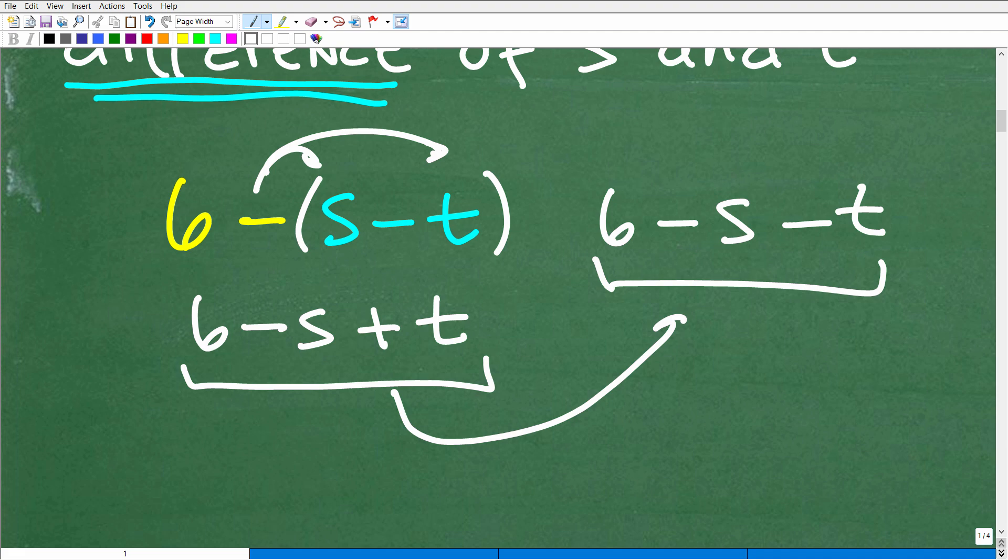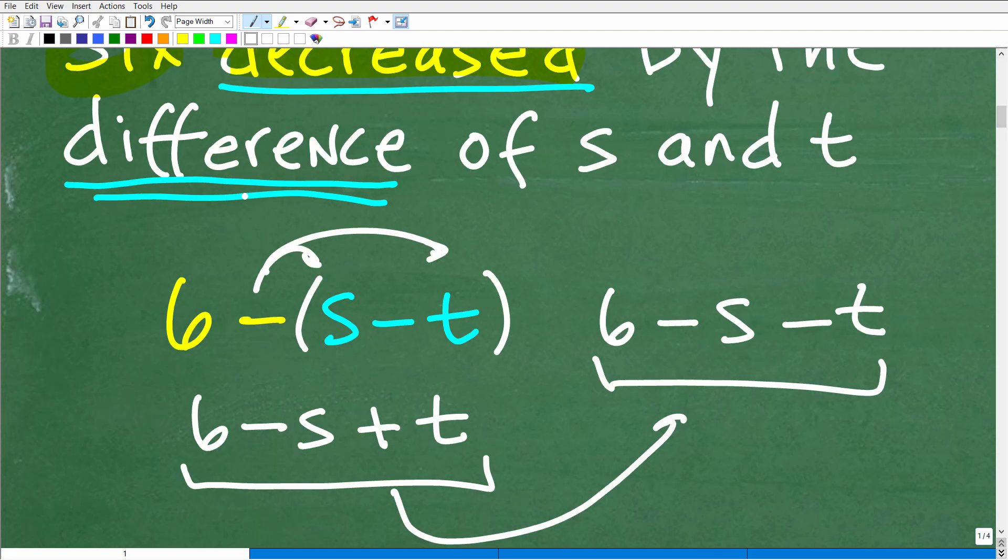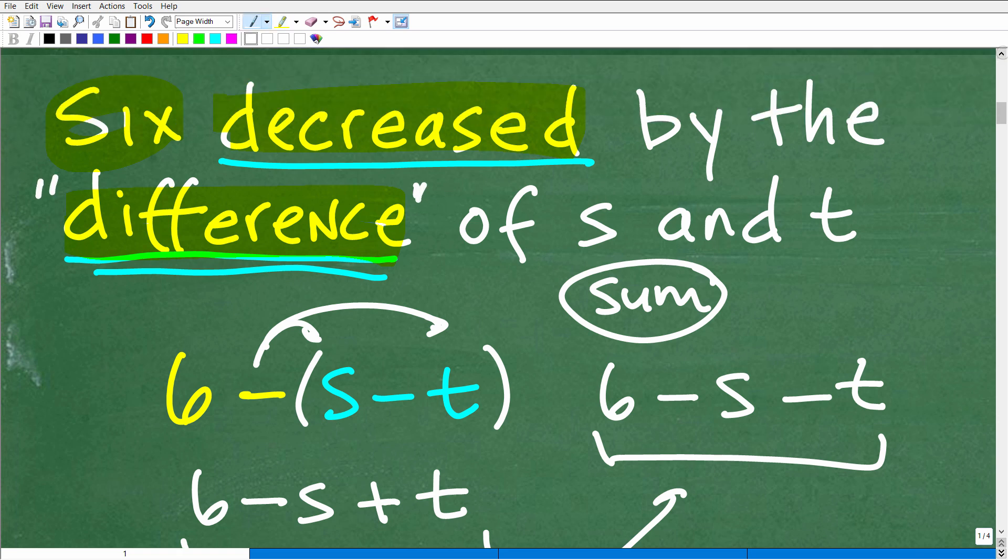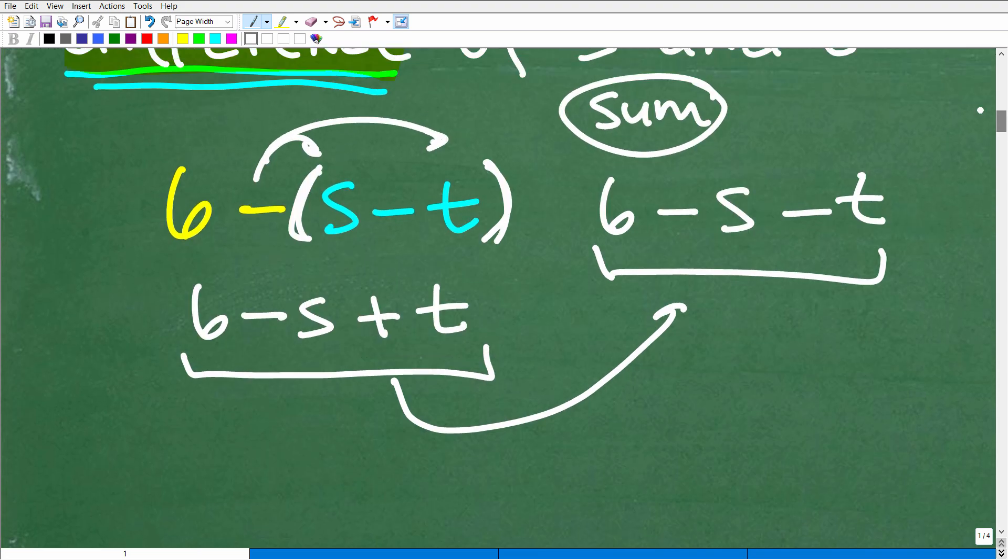So anytime you have the word difference, okay, or sum is another word, the sum, but especially it really, really makes a difference with the word difference. I didn't make that up, it's a coincidence that I'm using the word difference two times to make a point. Okay, when you have, it really does make a difference. Okay, when you see the word difference, you've got to have parentheses around that group. Okay, because you will tend to make this error right here. So if you made this error, don't feel bad. You're pretty close.